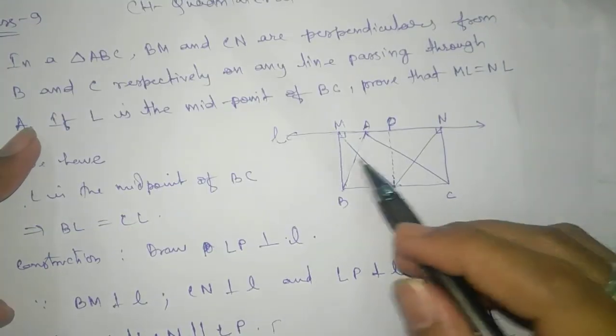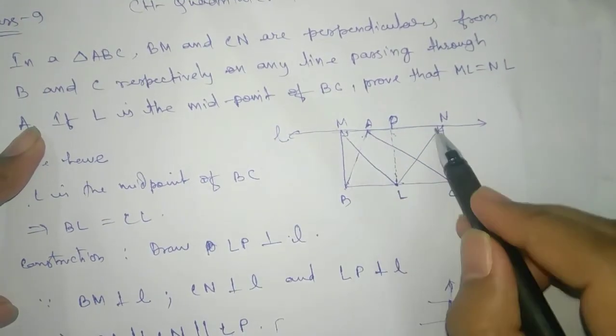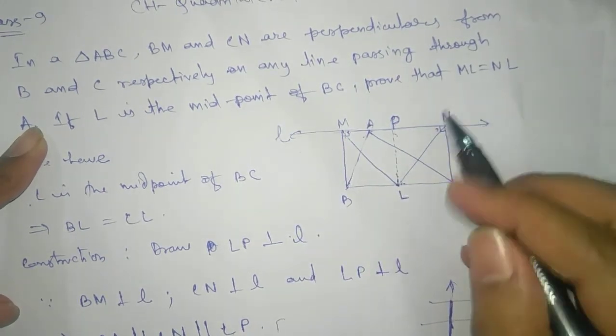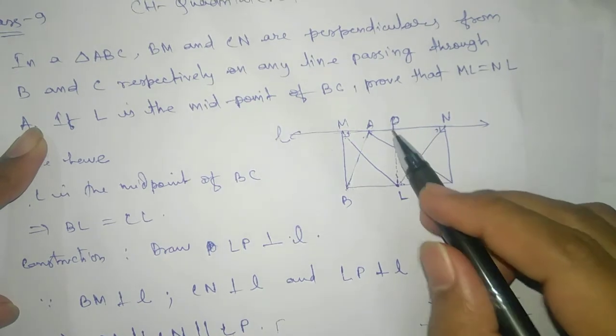Now our target. What is the reason to prove these two are equal? Actually our target is to show that LM equals to LN, and to show that we are going to make the triangles congruent.